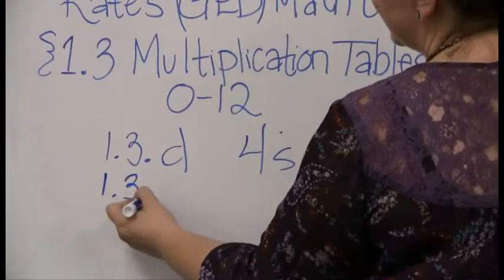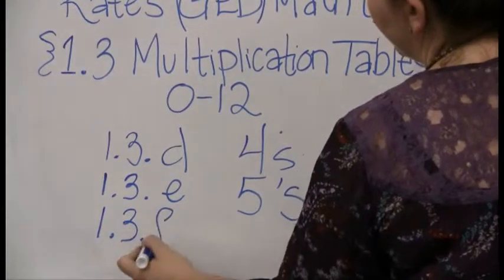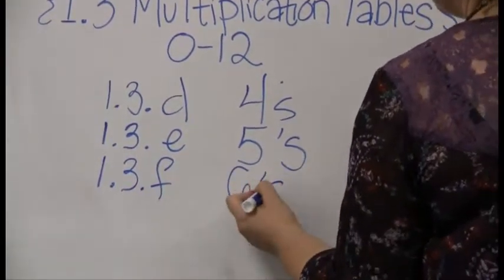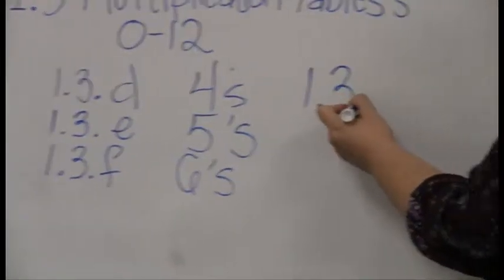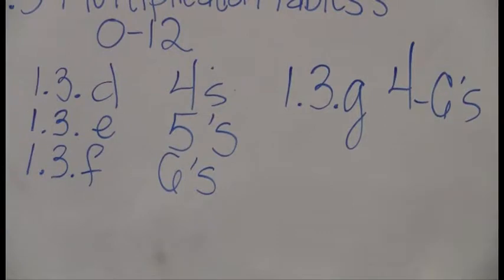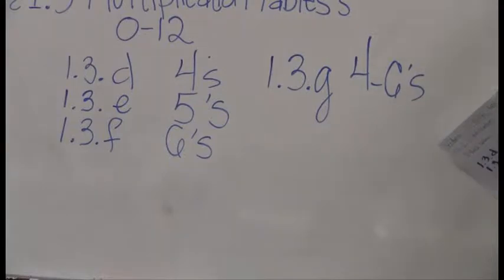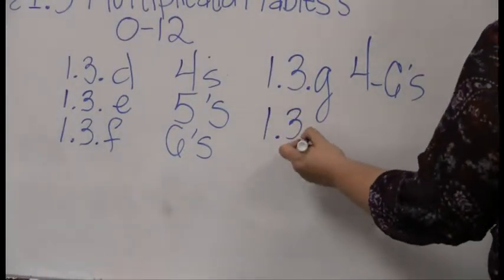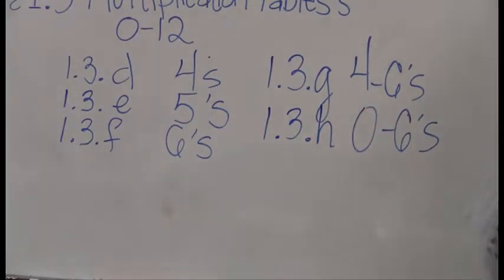1.3 D gives you the four times tables. And you can do that to memorize your fours. And then what you do is you'd move on to E, do your five times tables, and F, 1.3 F, and do your six times tables. And then what do you do from there? Well, I don't recommend going right on to your sevens because we have a tendency, if we don't review things, to forget them. So the next step, 1.3 G, actually has the four through sixes mixed all together. Start mixing those facts up, see if you can get your brain back straight again. And then finally, you'd move on to 1.3 H, which gives you the zeros through sixes.